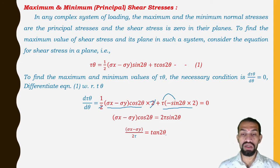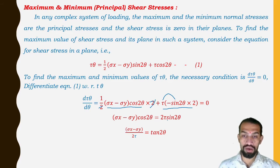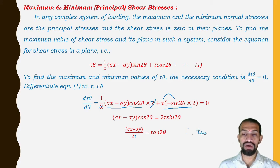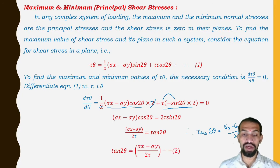So we can write it as tan 2θ = (σ_x − σ_y) / (2τ), or equivalently (σ_x − σ_y) / (2τ) = tan 2θ — either form is valid. This is equation number 2.